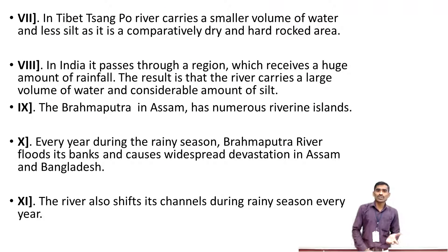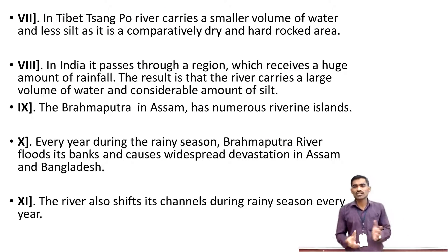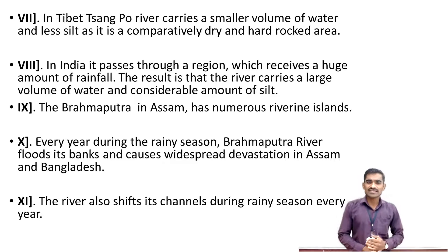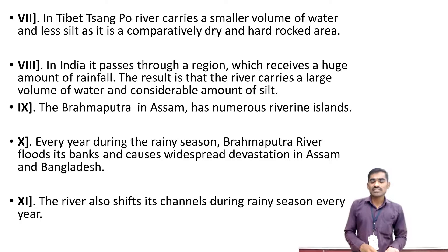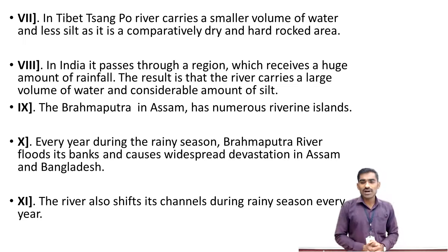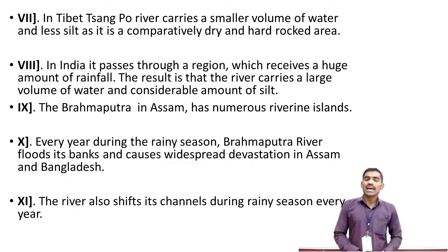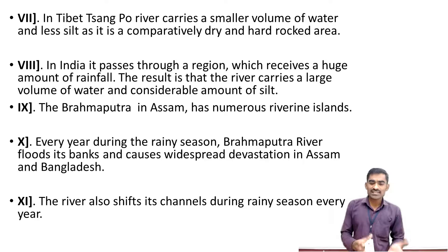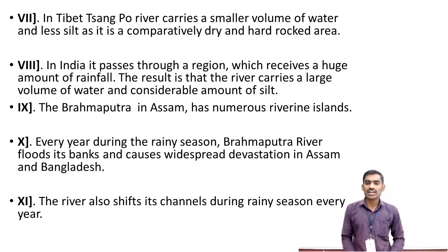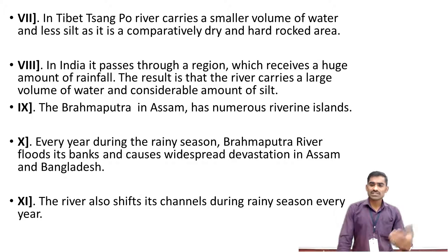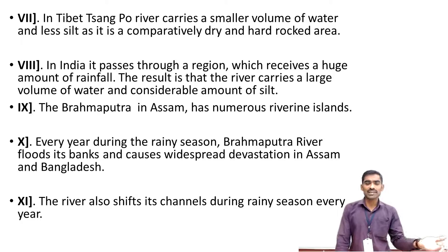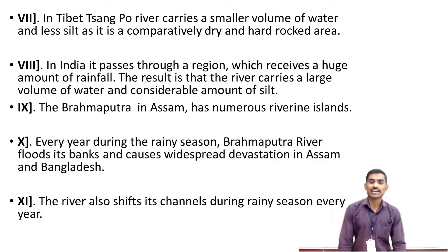The Sangpu river in Tibet carries a smaller volume of water and less silt. But when it crosses the northern mountains and enters India, it carries a lot of silt and soil, which it then deposits, contributing to the formation of the Sundarbans area.